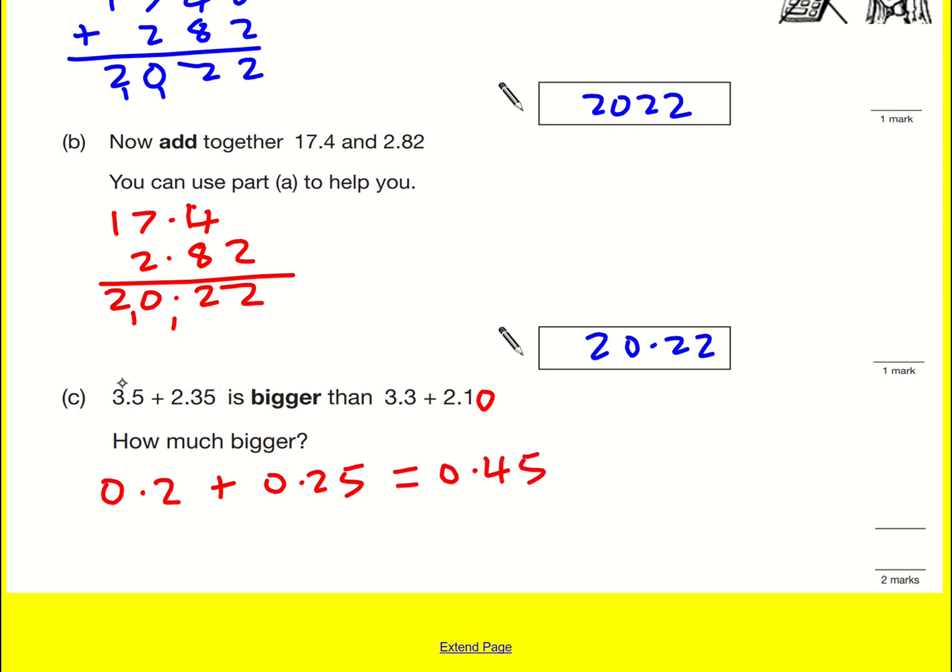If you didn't spot that, then you can add these together. Just be really careful. This should never be said as red as 2.35 because you might accidentally add it incorrectly. So let's do it the long way, 3.5 plus 2.35. That would give us 5.85.